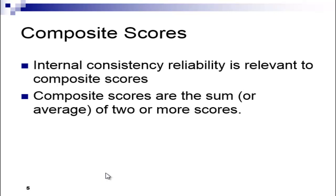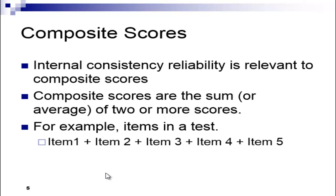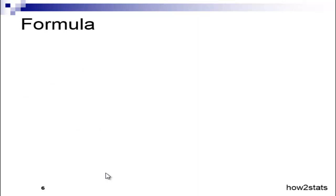These composite scores, not the individual item scores. If you had a test with five items and you summed each person's scores across the five items, you would have a composite score for each person. Internal consistency reliability is about those composite scores—how reliable are they.